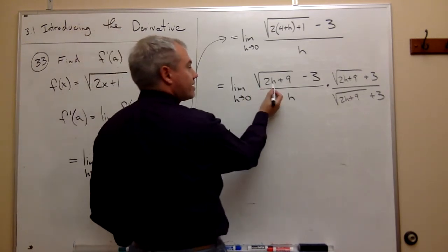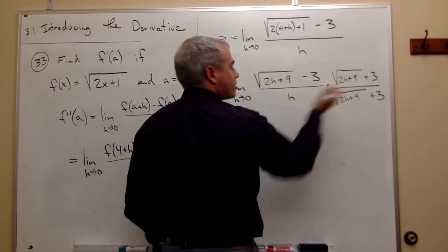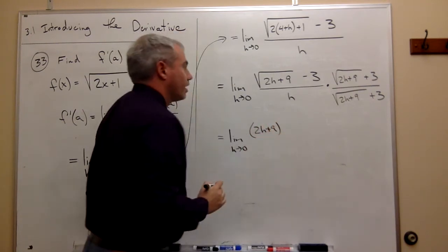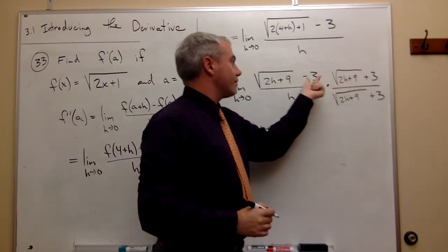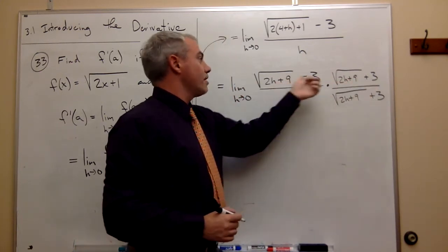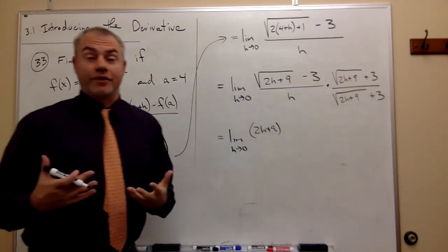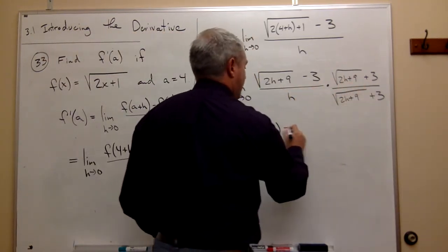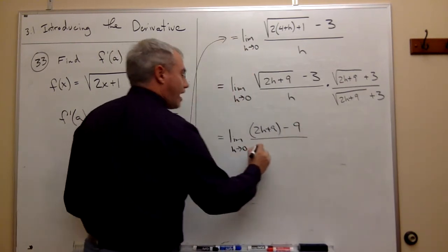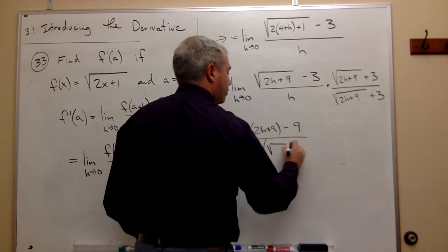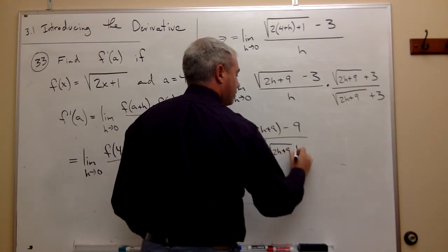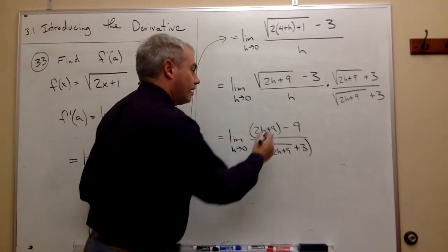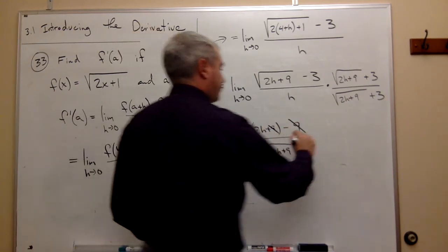Okay, when I multiply this I get the square root of 2h plus 9 times the square root of 2h plus 9 which is 2h plus 9. Then I get this guy times 3 and this guy times minus 3. So I get 3 of these minus 3 of these which is 0 of those so I'm not even going to write it down. Then I get negative 3 times 3 which is minus 9 divided by h times the square root of 2h plus 9 plus 3. Notice on top I have 2h plus 9 minus 9 so the 9's cancel and I'm left with the following.